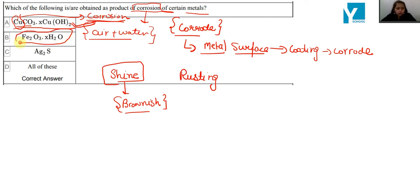This is Fe2O3·xH2O. This is iron. Corrosion on iron, we call it rusting.